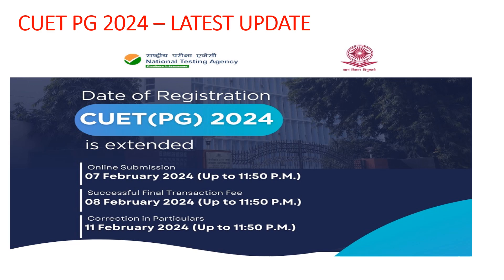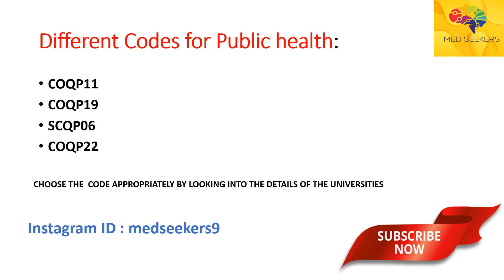These are the codes for the Public Health program. There are four codes: the first one is COQP 11, the second one is COQP 19, the third one is SCQP 06, and the fourth one is COQP 22.